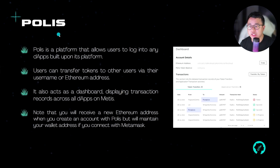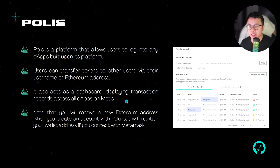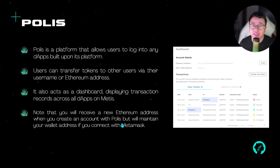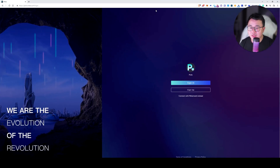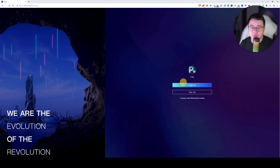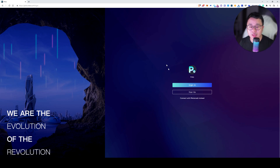They have a platform called Polis, which is essentially the dashboard of the MATIS ecosystem. When you go in, you can log into the various DApps built on the platform and do standard stuff like transferring tokens and viewing transaction history across all DApps you've interacted with. You can sign in with MetaMask, maintaining your same Ethereum address. But because many businesses may not have MetaMask, they allow you to create an account with a standard email and password, which is more business friendly and helps onboard real businesses.